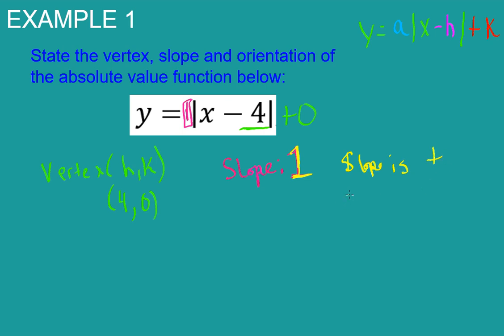The orientation is that it will open up. So it opens up. And we've got to remember that the basic shape of any absolute value function is a v.